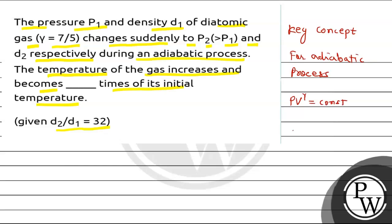And since density D is equal to mass per unit volume, therefore volume is equal to mass per unit density. So we can rewrite this equation as P into m upon D, raised to power gamma, equals to constant.